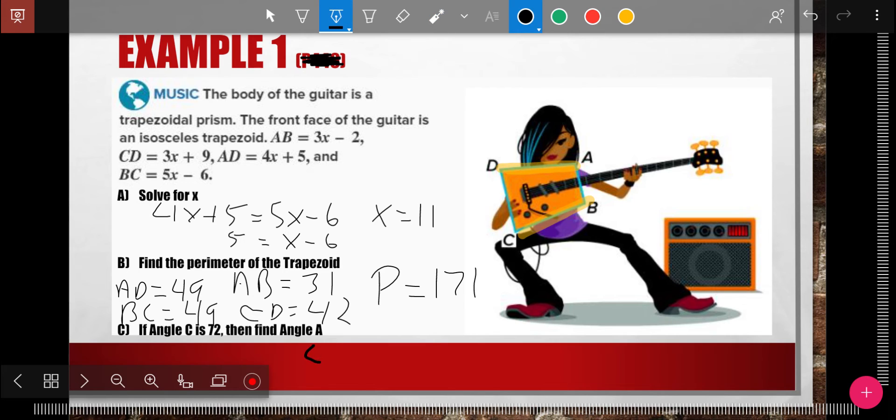Well, because it's isosceles, if angle C is 72, right? If angle C is congruent to angle D. So if angle C is 72, angle D is 72. So I know the measure of angle D is 72.